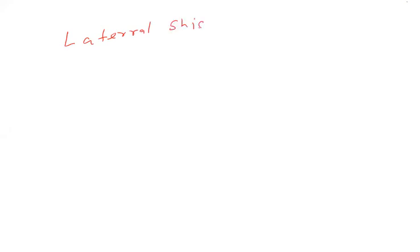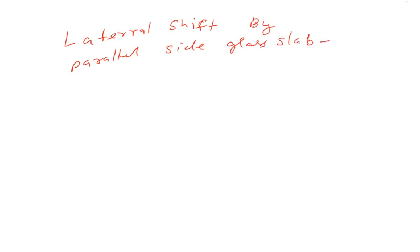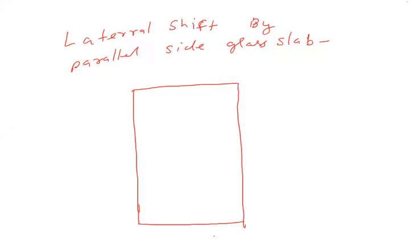Lateral shift by parallel-sided glass slab. अगर आप बात करते हैं एक glass slab के निकलने वाली ray के shift के बारे में — देखिए, एक तो मैंने यह आने वाली ray देखी, और यह देखो जाता हुआ — ऐसे जाता यदि यह glass slab नहीं होता।